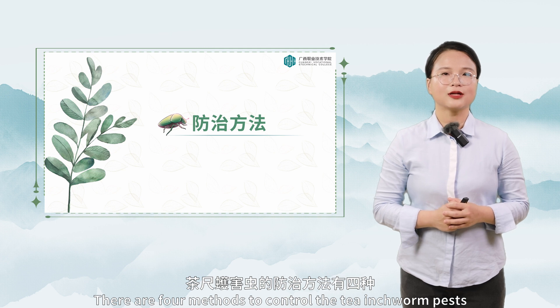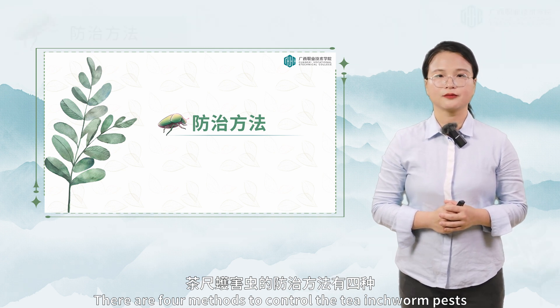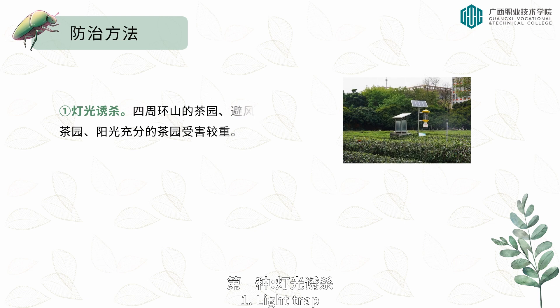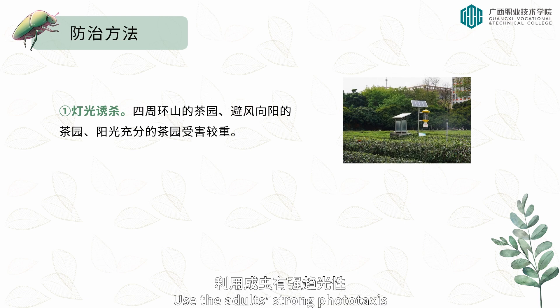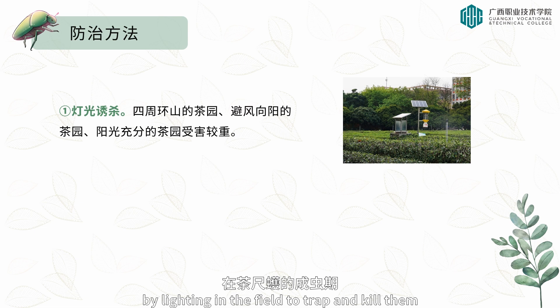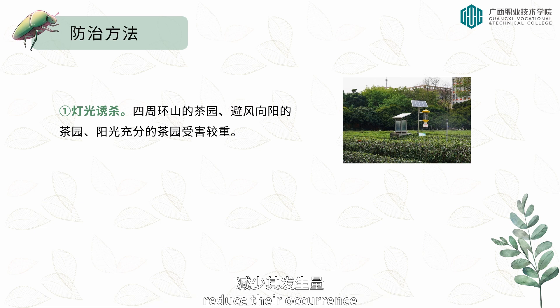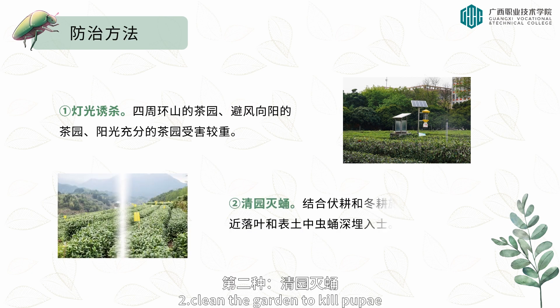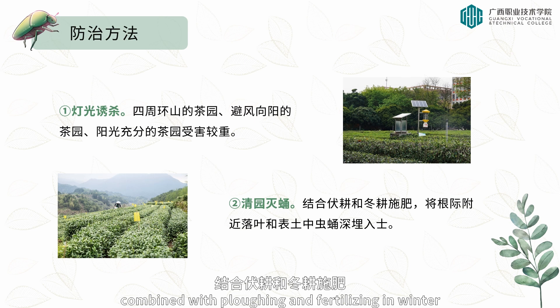There are four methods to control tea inchworm pests. One: light trap — use the adult's strong phototaxis by lighting in the field to trap and kill them during the adult stage to reduce their occurrence. Two: clean the garden to kill pupae — combined with plowing and fertilizing in winter, deep-bury insect pupae found in fallen leaves and topsoil near the rhizosphere.